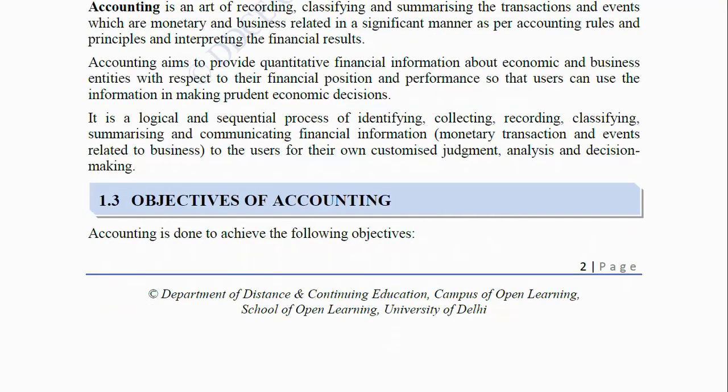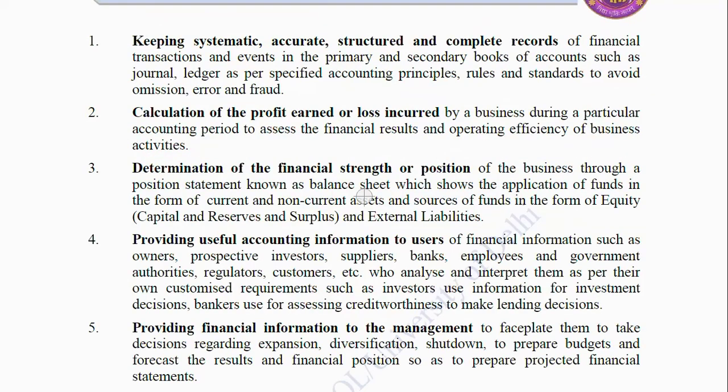Objectives of Accounting: Accounting is done to achieve the following objectives. First, keeping systematic, accurate, structured and complete records of financial transactions and events in the primary and secondary books of accounts such as journal and ledger, as per specified accounting principles, rules and standards, to avoid omission, error and fraud.